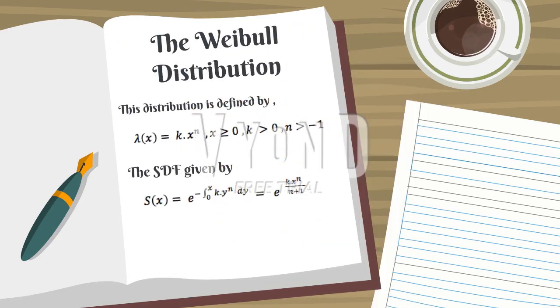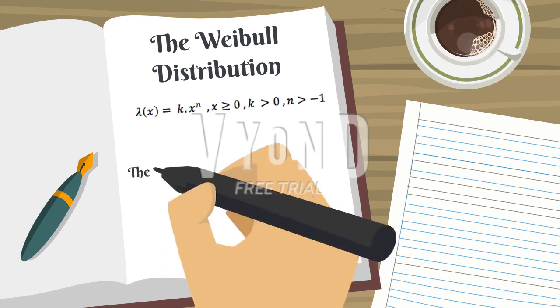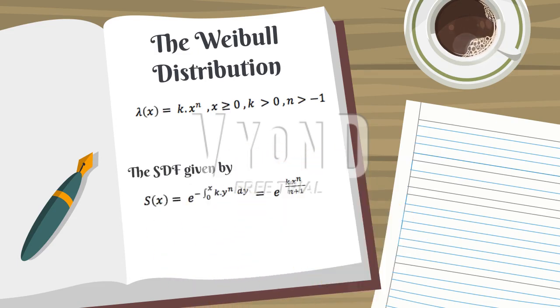The Weibull distribution properties: this distribution is defined by lambda(x) equals k multiplied by x to the power of n. The survival distribution function is given by S(x) equals exponential of negative k multiplied by x to the power of n, divided by n plus 1.